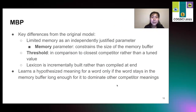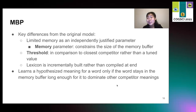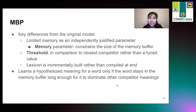Here are the key differences between MBP and the original Pursuit model. First and most importantly, the limited memory is an independently justified parameter that constrains the size of the memory buffer. Also, instead of having a tuned threshold value, we compare scores to the closest competitors, motivated by Weber's law that quantity difference is saliently perceivable on the logarithmic scale. We build the lexicon incrementally rather than compiling it at the end, allowing the model to be learning words continuously and giving it the opportunity to learn homophones. Put simply, MBP learns a hypothesized meaning for a word only if the word stays in the memory buffer long enough for it to dominate other competitor meanings.